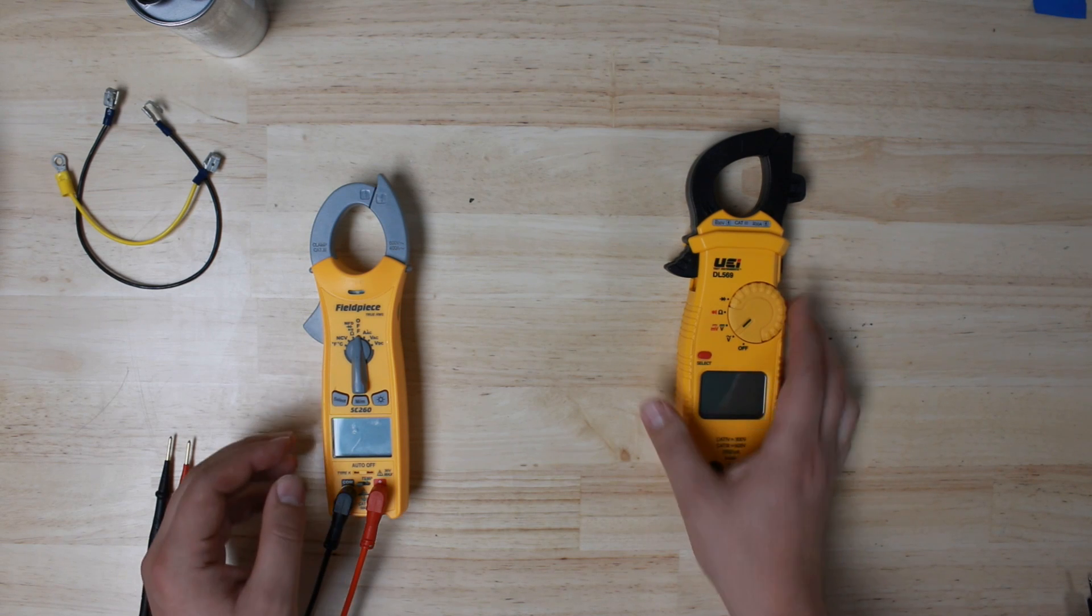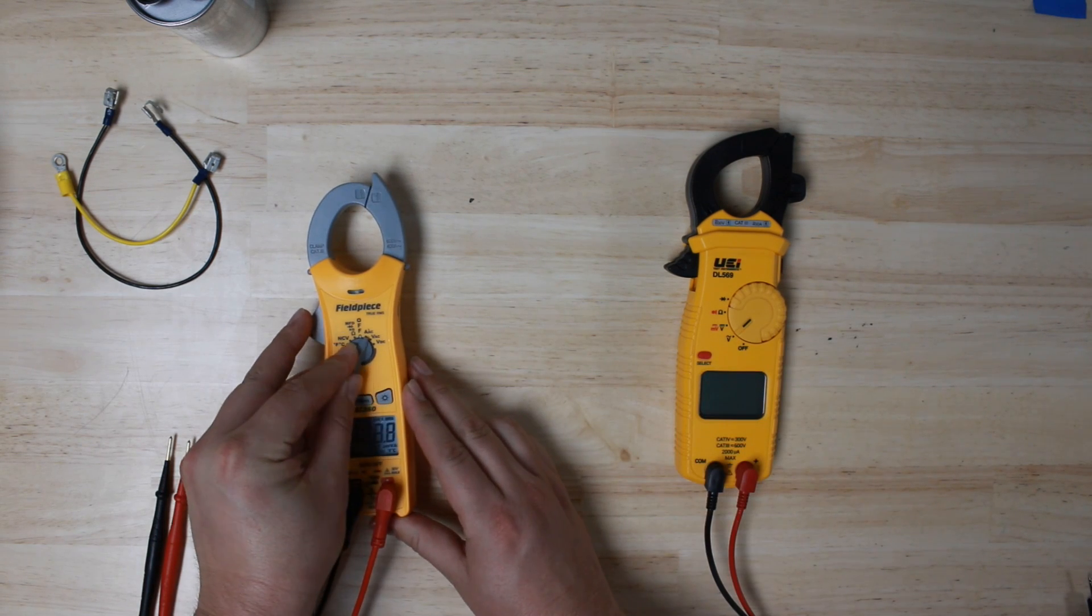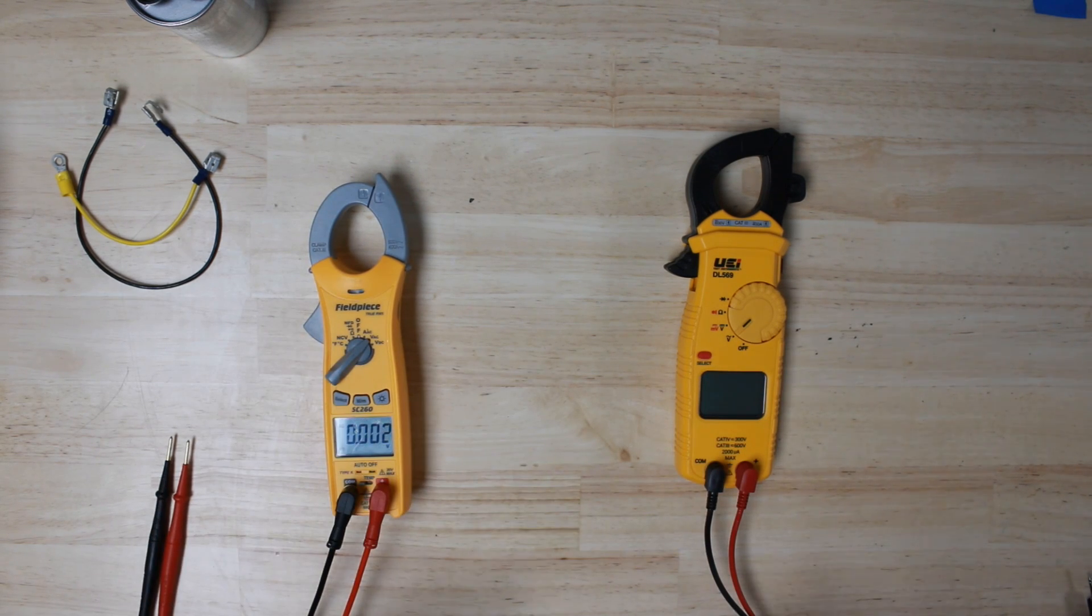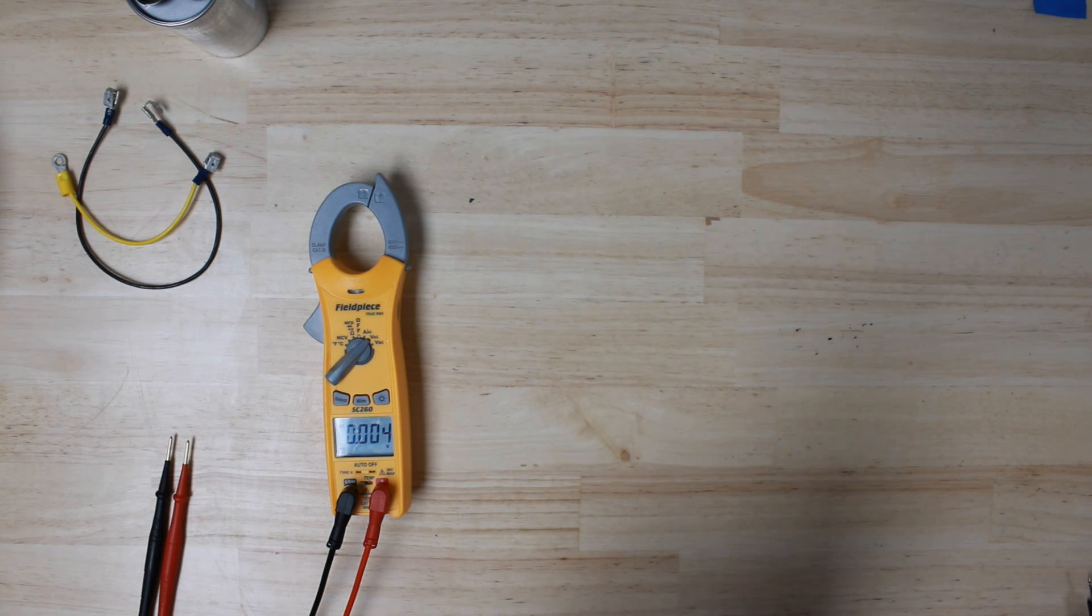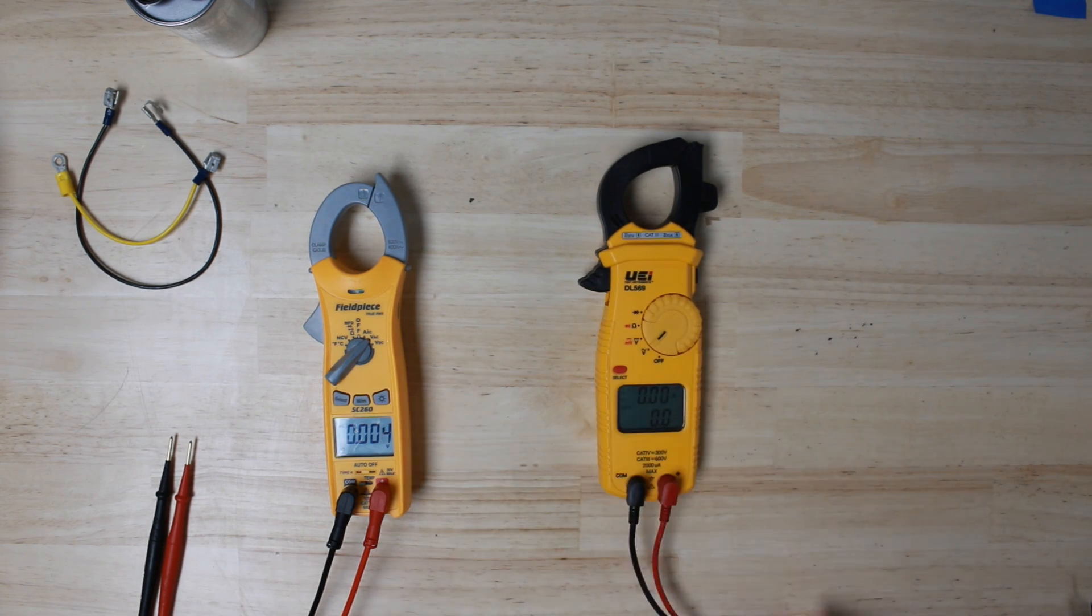The first thing we're going to do is set them both to volts alternating current. This is how we measure AC voltage.